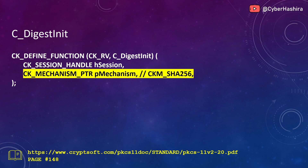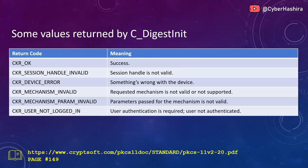The second argument is the mechanism that you want to use for calculating the hash. This can be a hashing mechanism such as CKM_SHA1 or CKM_SHA256. These are some return codes that C_DigestInit may return. More information is also available on page 149.